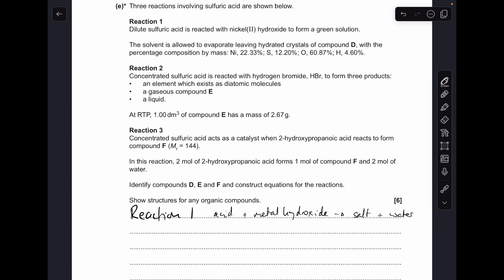And finally part E, so reaction 1, we've got dilute sulfuric acid reacting with nickel 2 hydroxide to get this green solution. So just remember acid plus metal hydroxide makes salt and water. So sulfuric acid with nickel 2 hydroxide will give nickel 2 sulfate and water.